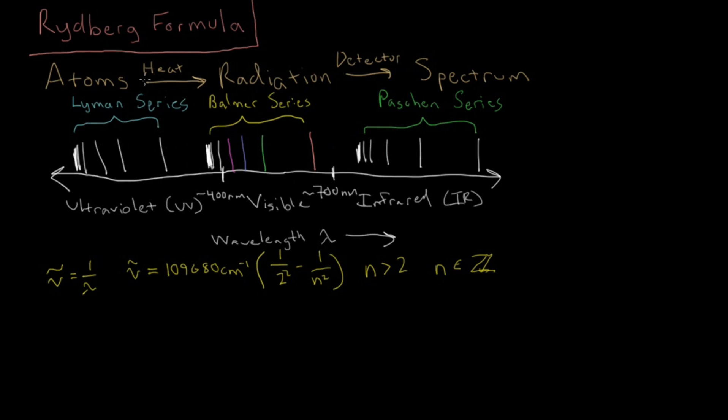Okay, so we got these various lines here, but then it was noticed that for the Lyman series, you got the same constant times one over one squared this time, minus one over n squared, where n is a number greater than one, and also an integer.